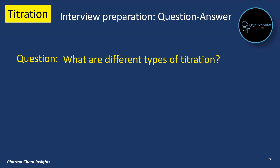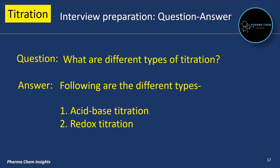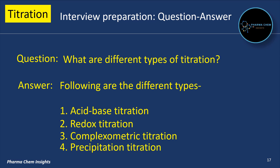Next question: what are the different types of titration? The different types of titration are: first, acid-base titration; second, redox titration; third, complexometric titration; and fourth, precipitation titration.